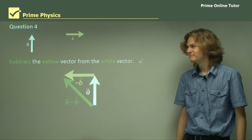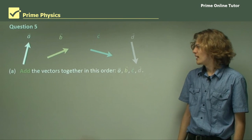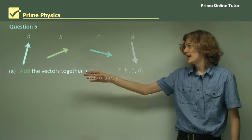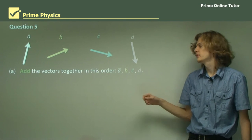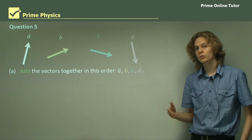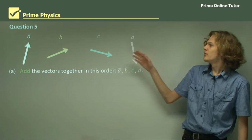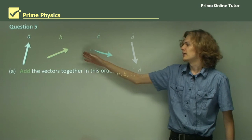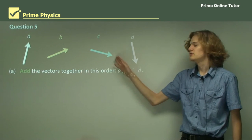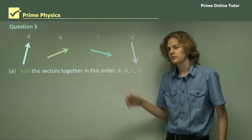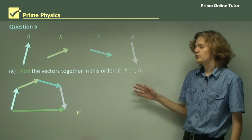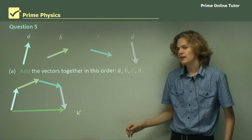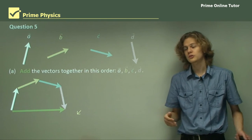Question 5, Part A: Add the vectors together in this order — A, B, C, D. Joining them head to tail: tail of B to head of A, tail of C to head of B, tail of D to head of C — it looks sort of like an arch. The resultant vector is drawn from the tail of A to the head of D, and it's just a left-to-right vector, colored green.